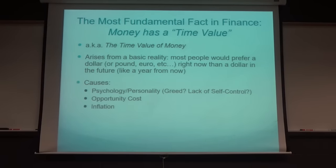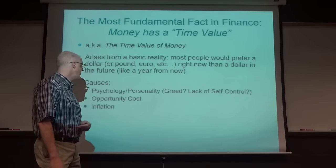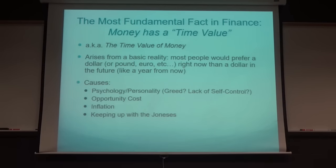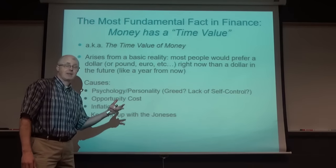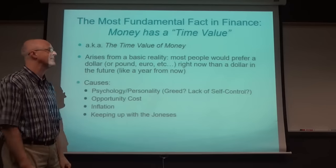There's also inflation - the value of your money goes down over time. People typically think of that as the price of things going up over time, so you want the money right now to buy what you need right away. There's also the idea of keeping up with the Joneses - seeing your neighbor buy a nice house, a boat, or a nice car and wanting to do the same thing.